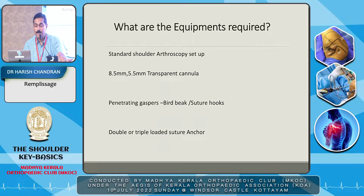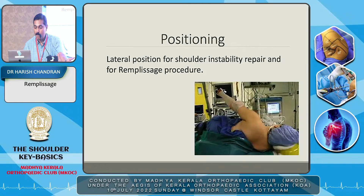Equipment required for Remplissage includes a standard shoulder arthroscopy setup, 8mm and 5.5mm transparent cannulas, penetrating graspers, bird beaks, suture hooks, and double or triple loaded suture anchors. The procedure is performed in the lateral position, which is sufficient for both shoulder instability repair and Remplissage.